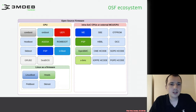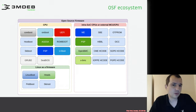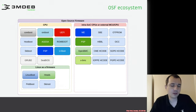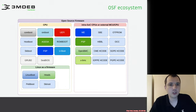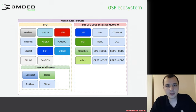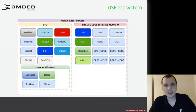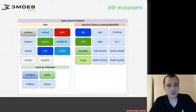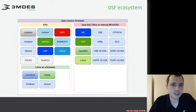We have AGESA. Here we start with firmware components which are just a part of the whole firmware for a given platform. For example, to boot a Power platform we need multiple components. To boot a modern Intel platform we need multiple components. For example, to boot modern Intel we need coreboot plus FSP. To boot modern AMD, we need coreboot plus AGESA.